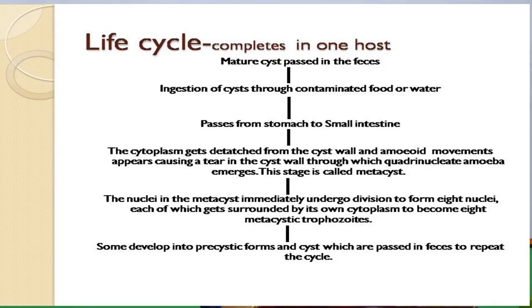The life cycle of Entamoeba histolytica is completed in one host. We will go in detail about how it enters the body and infects the host. The mature cysts are passed by an infected, often asymptomatic, carrier during defecation.